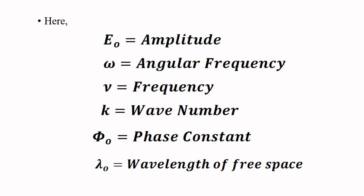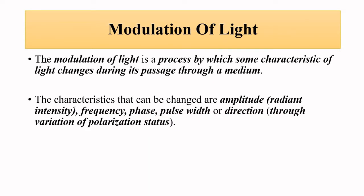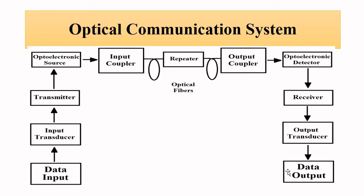Modulation generally deals with changing one of these parameters — amplitude, frequency, or phase. These are the things that are altered to transmit the signal or the information that has to be passed from the sender to the receiver. The optical transmitter or modulator on the sender side performs modulation, and the receiver side performs demodulation.